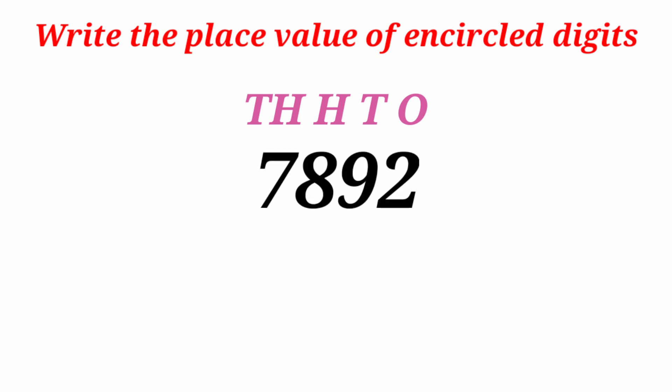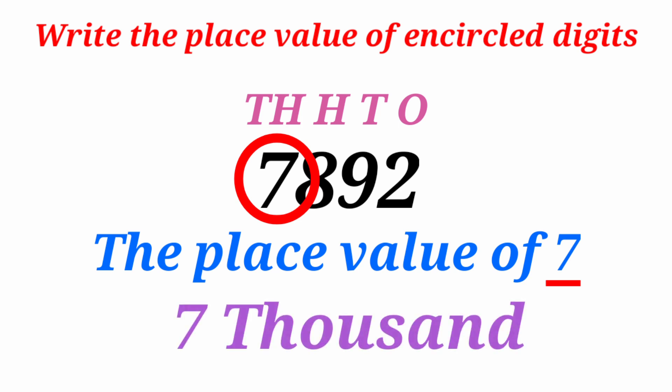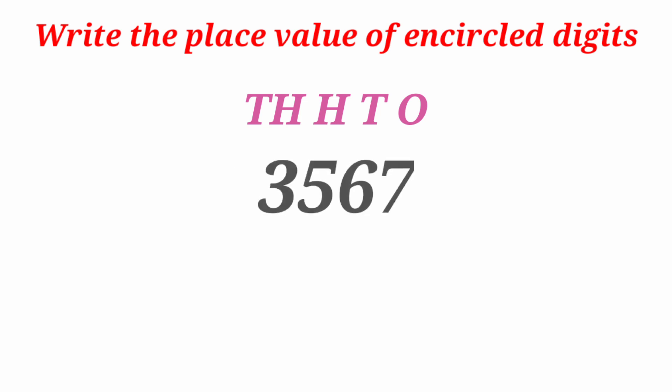7,892 — the place value of 7. 7 is in the 1,000s place, so you will write 7,000.